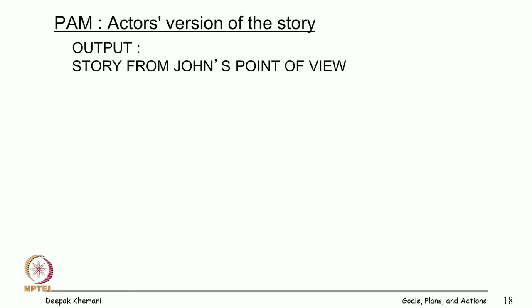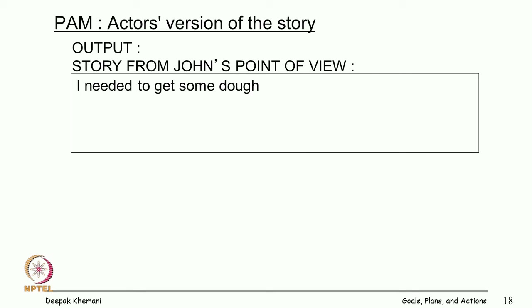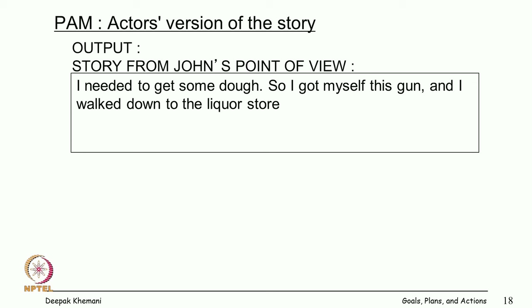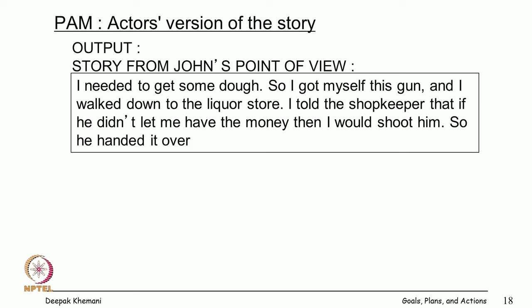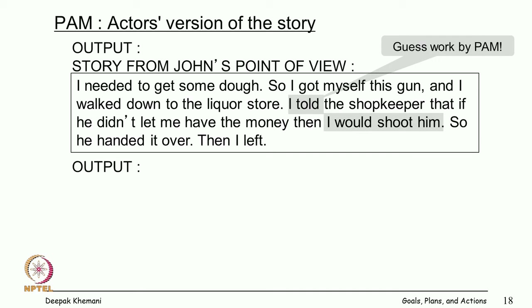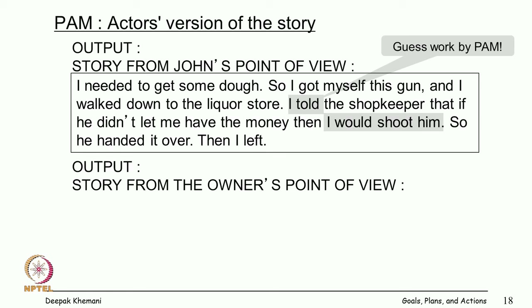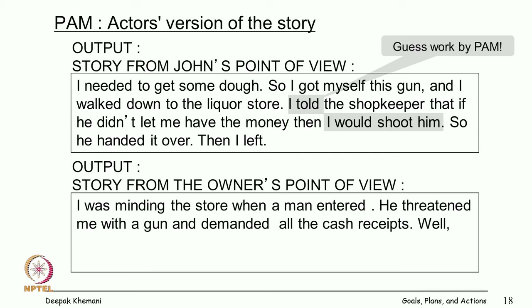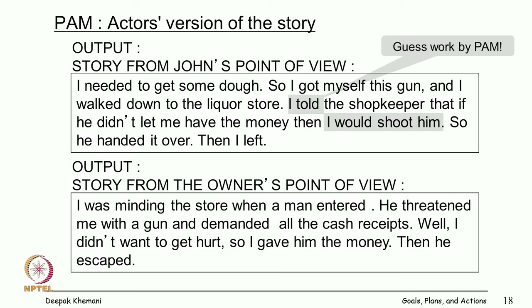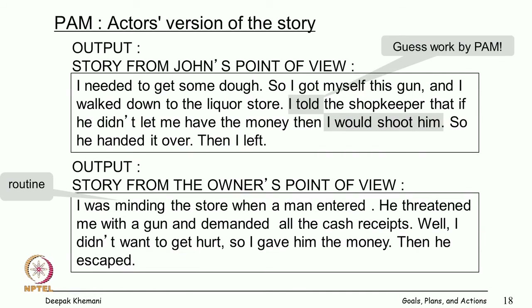PAM can produce output from each of the two protagonists' points of view. From John's point of view: 'I needed to get some dough so I got myself a gun and walked into the liquor store. I told the shopkeeper that if he did not let me have the money I would shoot him, so he handed it over and then I left.' From the owner's point of view: 'I was minding the store when a man entered' — note it is smart enough not to use the name John here — 'he threatened me with a gun and demanded all the cash. I did not want to get hurt so I gave him the money, and then he escaped.'